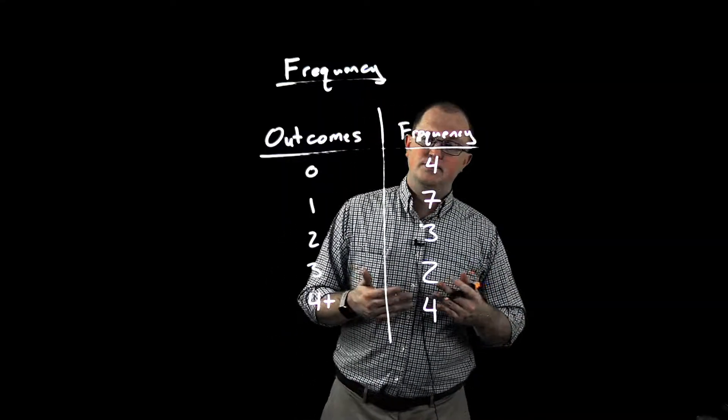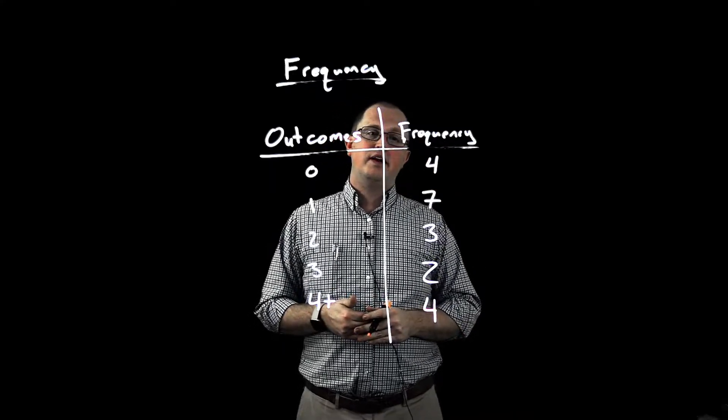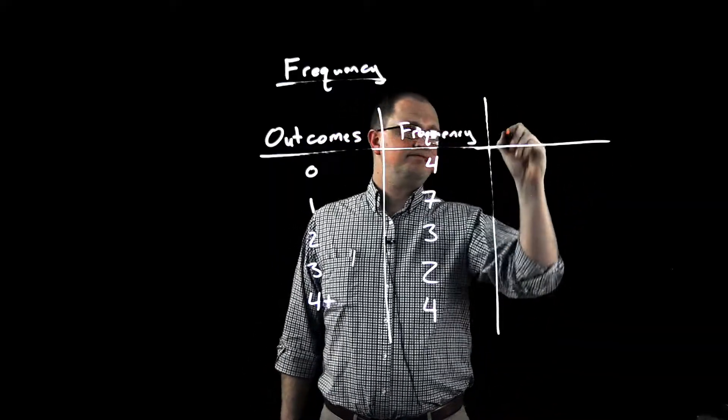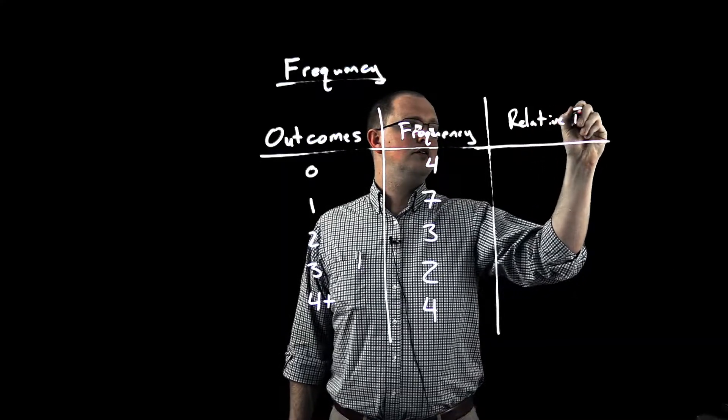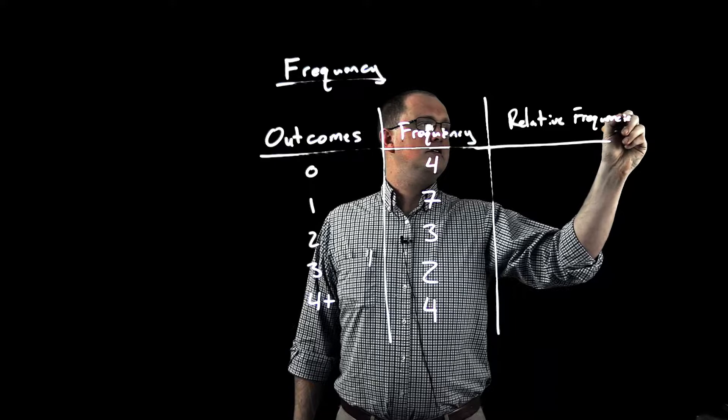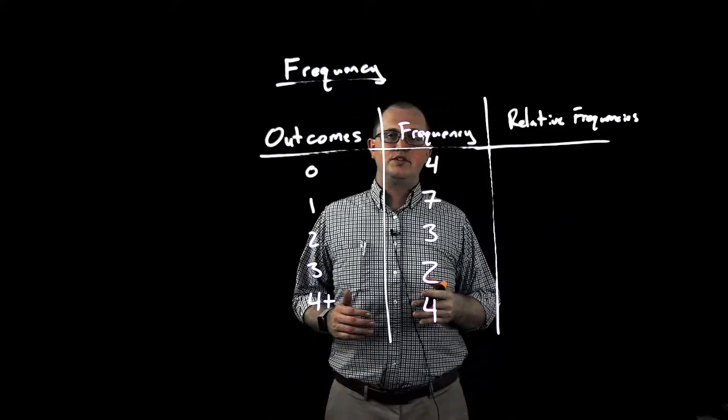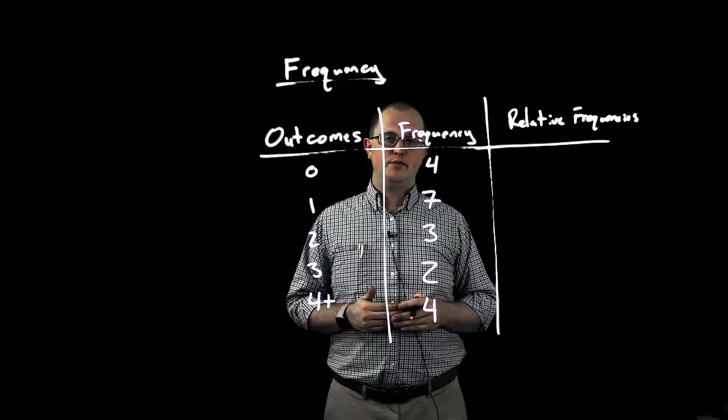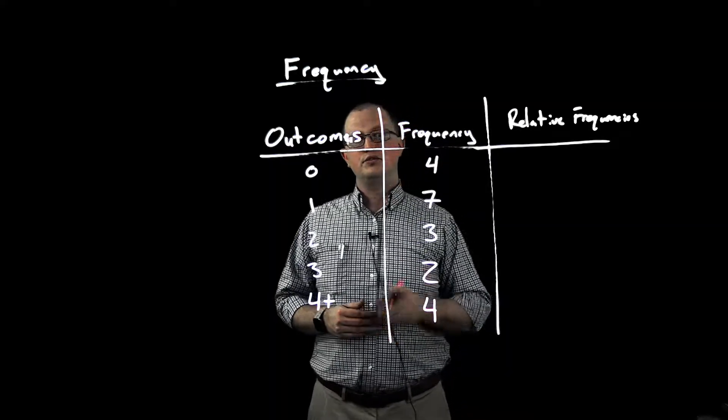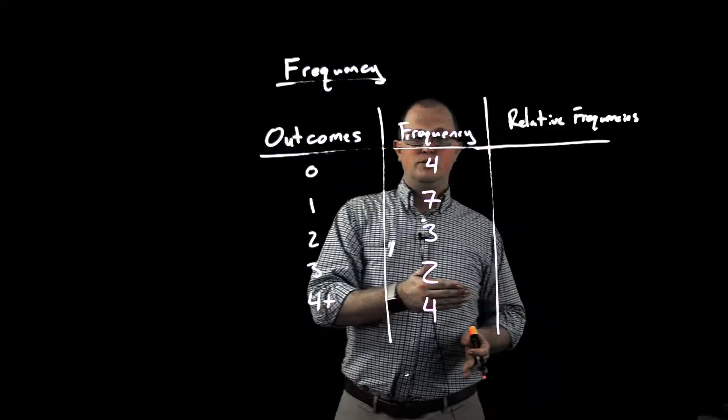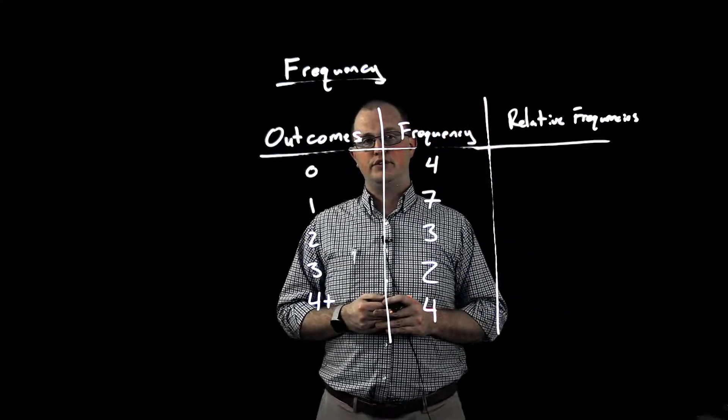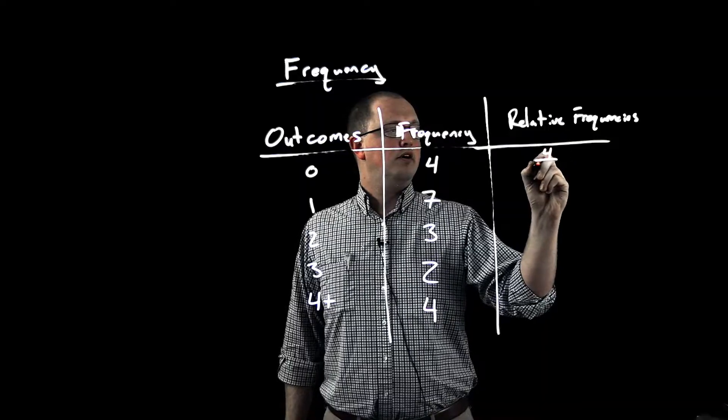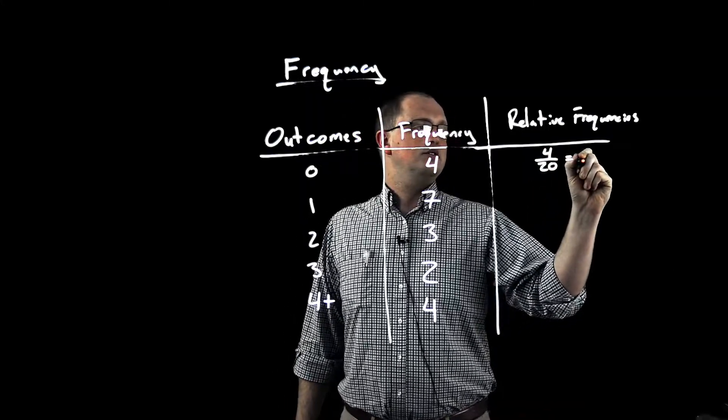Now, sometimes it's useful to look at just bare frequencies, but a lot of times it's interesting to talk about relative frequencies as well. So relative frequencies have us switch from just the number of times that something happens to a percentage of the number of times that we saw a particular result. So to move from frequency to relative frequency, we just take the frequency that we observed and divide it by the total number of responses. So in this case we had 20 responses, and so we got 0, 4 out of 20, which is 0.20.